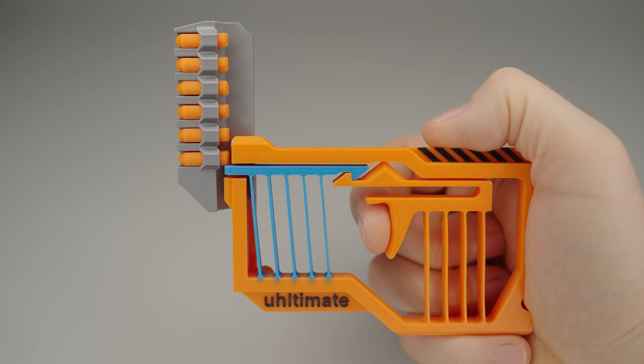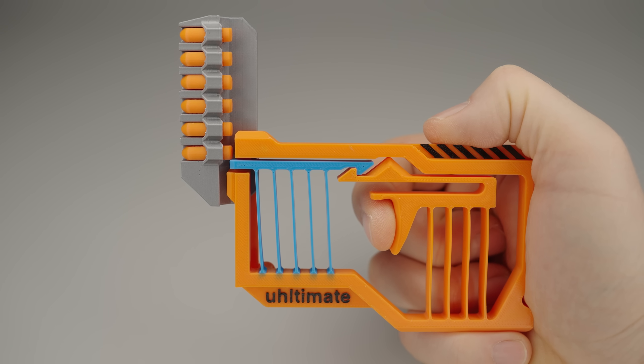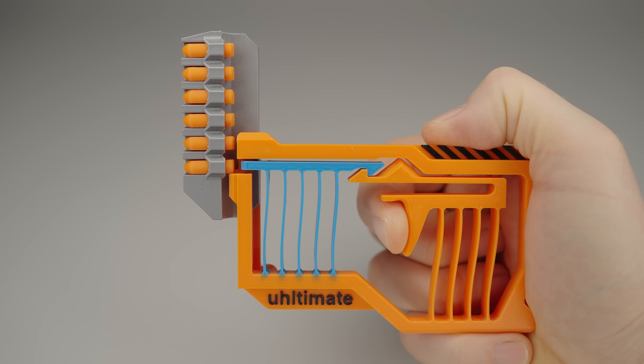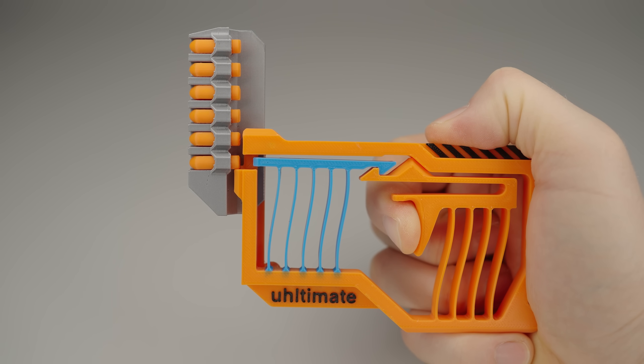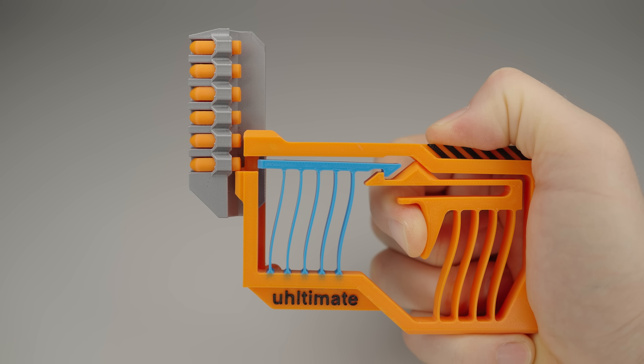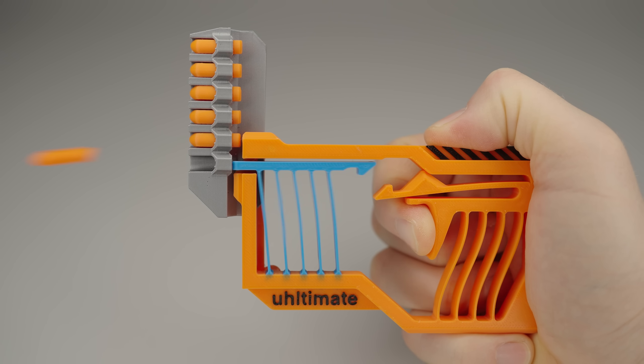When you pull the trigger, the hammer gets pulled back, and the magazine shifts down a bit until the bullet rests on the ledge. If you continue pulling the trigger, it moves further back until the hook is pushed down. When it's pushed down far enough, the hammer gets released and snaps forward, hitting and firing the bullet.